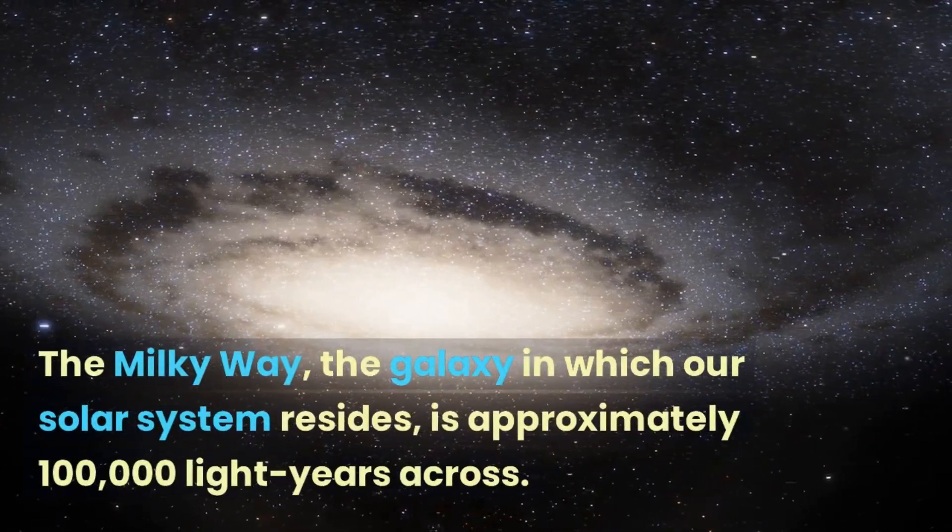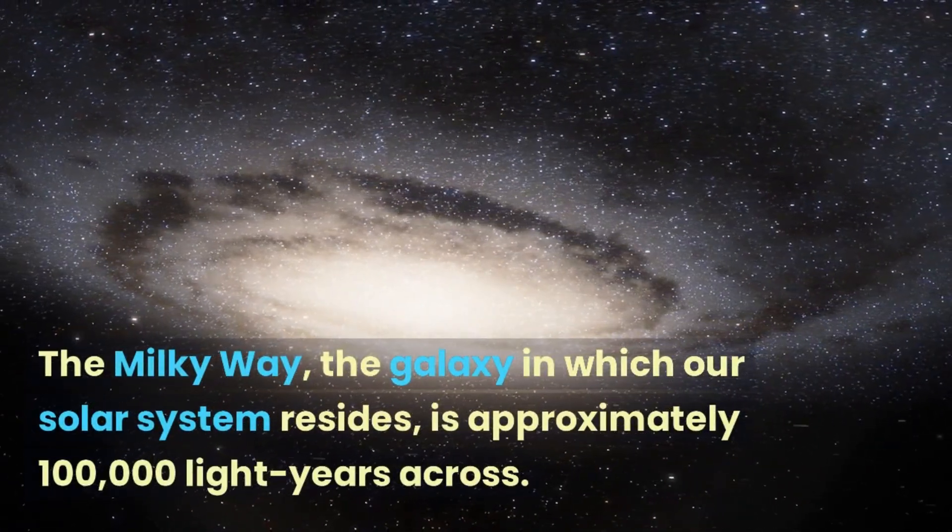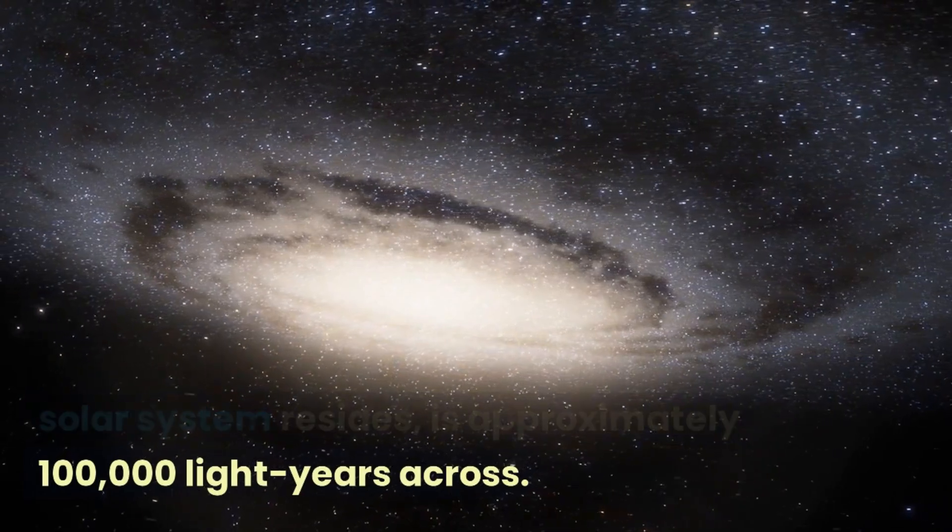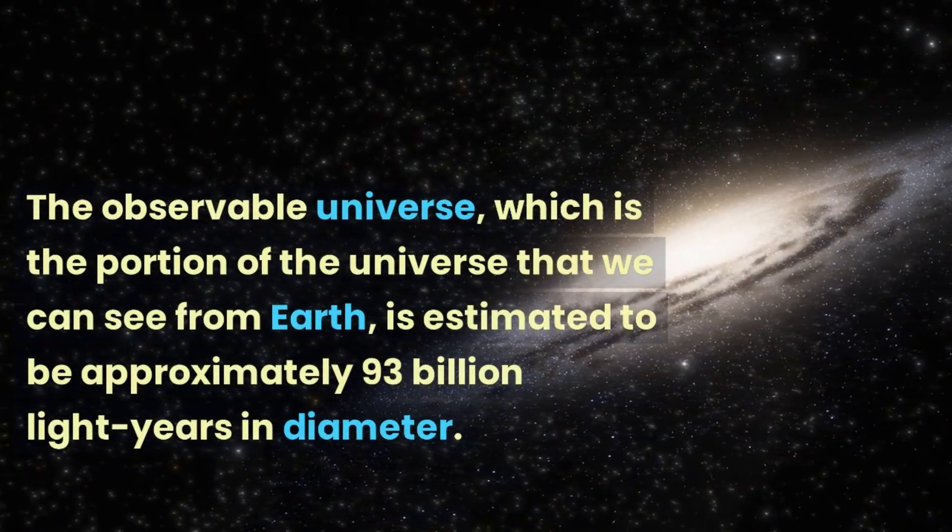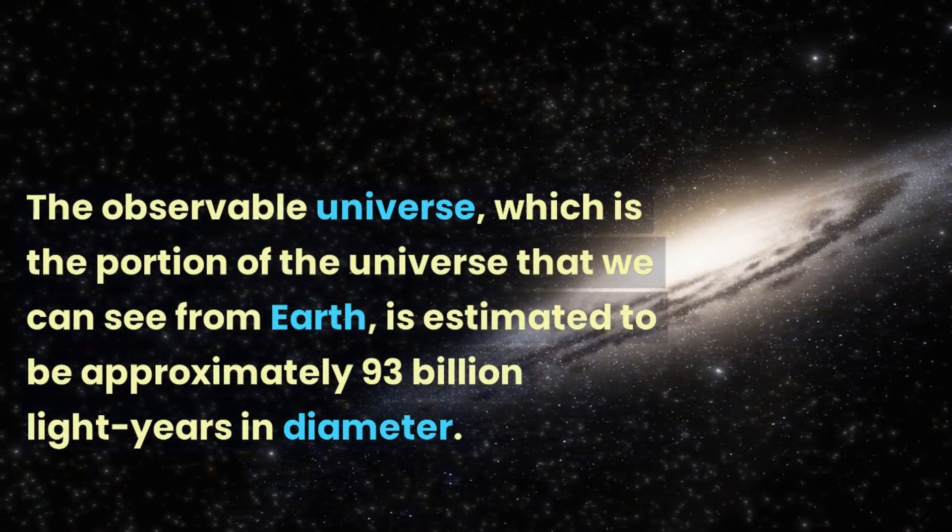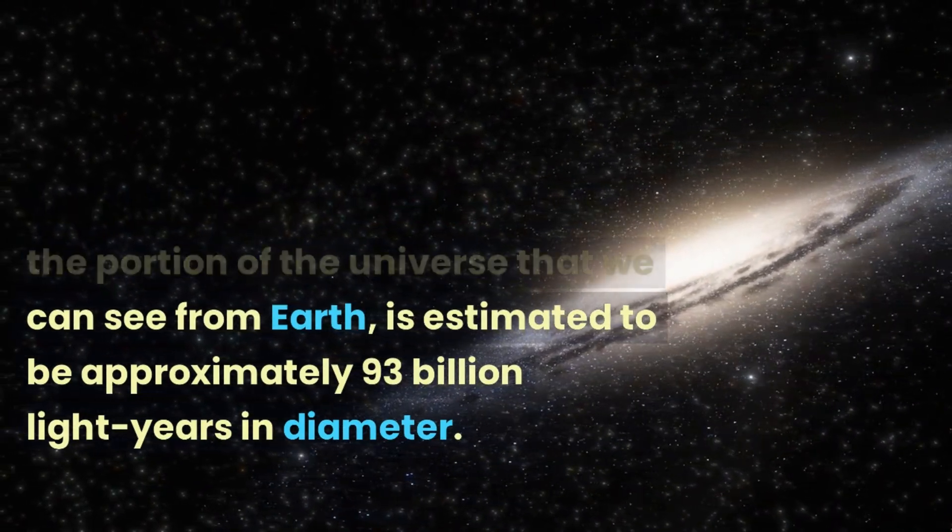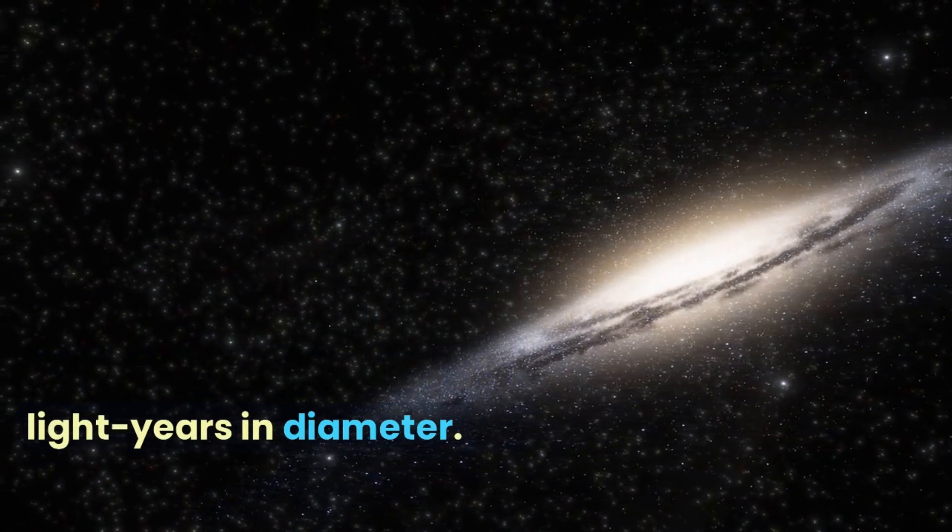The Milky Way, the galaxy in which our solar system resides, is approximately 100,000 light years across. The observable universe, which is the portion of the universe that we can see from Earth, is estimated to be approximately 93 billion light years in diameter.